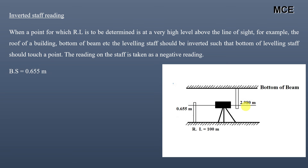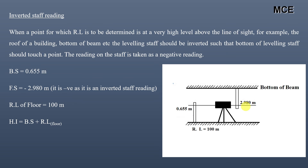Our back sight is 0.655 meter. The foresight is minus 2.980 meter — it is negative since it is an inverted staff reading. The reduced level of the floor is 100 meter, therefore the Height of Instrument equals back sight plus reduced level of floor: 0.655 plus 100, which gives 100.655 meter.